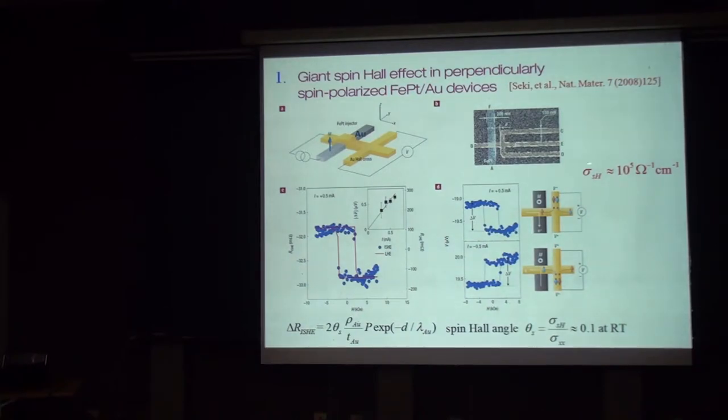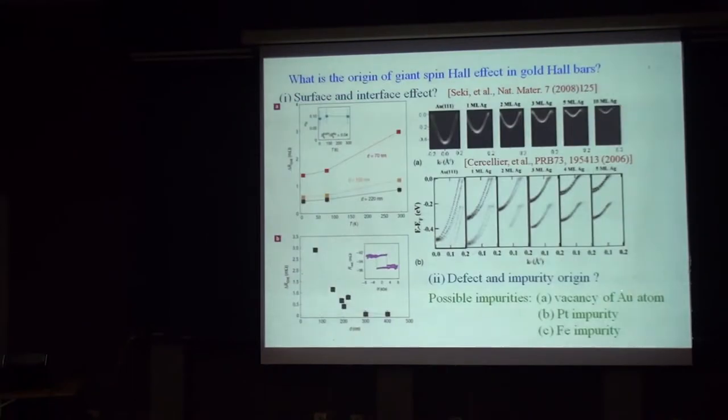Now, experiment people know that the sputtering can be very dirty. I'm a theoretician. But obviously, when you sputter platinum ion, some iron ion and platinum may be incorporated into gold Hall bar. So my suspicion can be justified. So instead of considering surface effect, I consider defect effect, impurity.